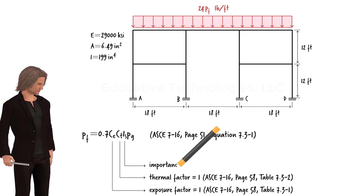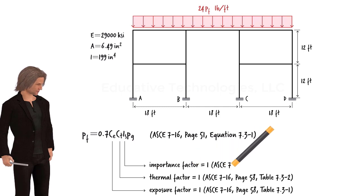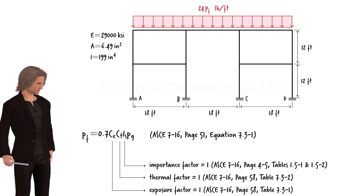I-S is the importance factor. It is a measure of the risk to human life in the event of structural failure. For a typical residential house, the importance factor is 1.